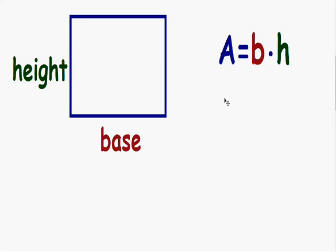Here we're going to find the area of a rectangle. The formula that we use to find the area of a rectangle is A equals the base times the height. The A stands for the area, the B stands for the base, and the H stands for the height.